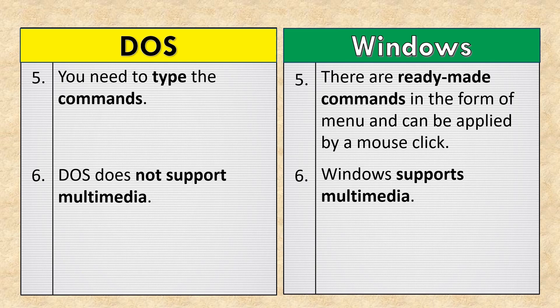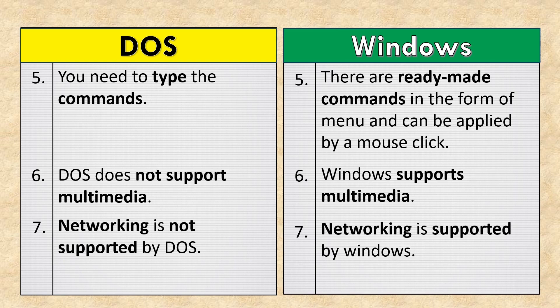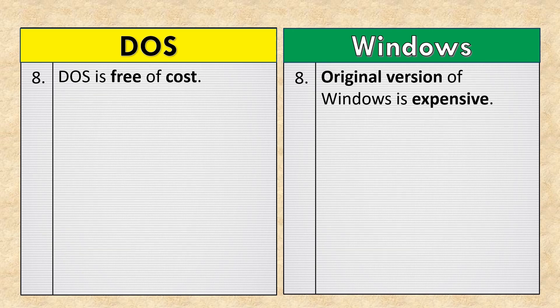DOS does not support multimedia, while Windows supports multimedia. Networking is not supported by DOS, but networking is supported by Windows. DOS is free of cost, whereas the original version of Windows is expensive.